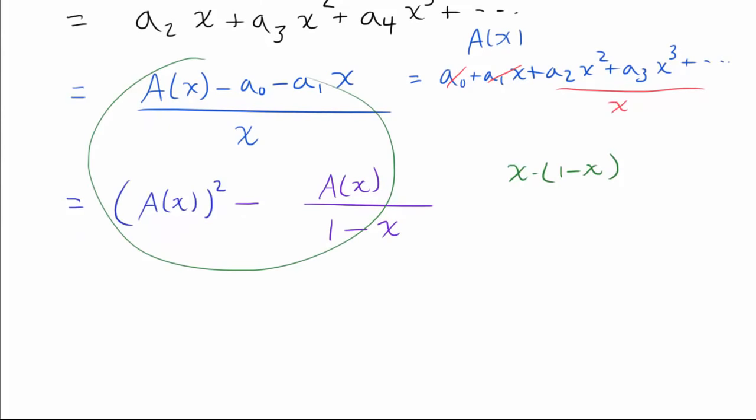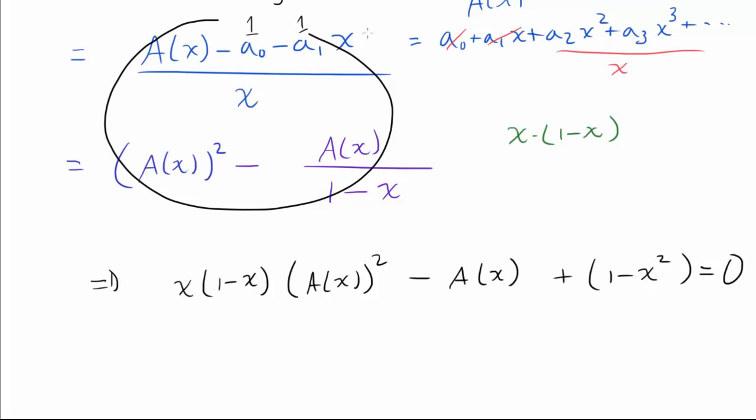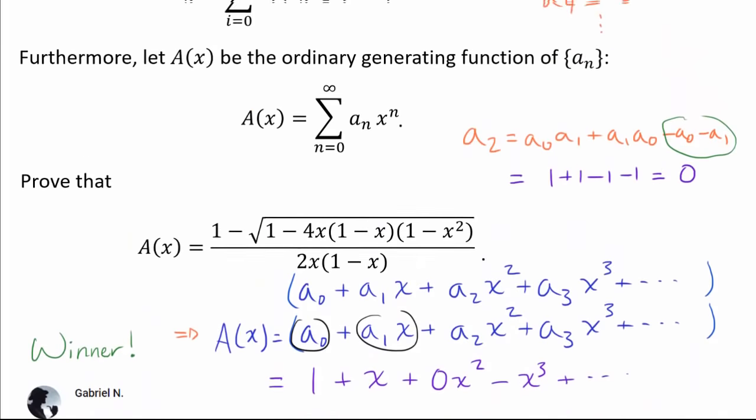And from here, it's a routine manipulation. To rearrange this quadratic in A(x) in standard form and apply the quadratic formula, we can replace a₀ and a₁ by 1. And when we rearrange it, I'm not going to bore you with something that's very elementary. We get x times (1-x) times A(x)² minus A(x). Then we end with 1 minus x². And this thing should be 0. You can obtain this by multiplying both sides of this equation by x times (1-x) if you're interested.